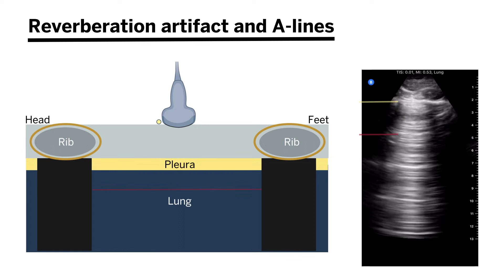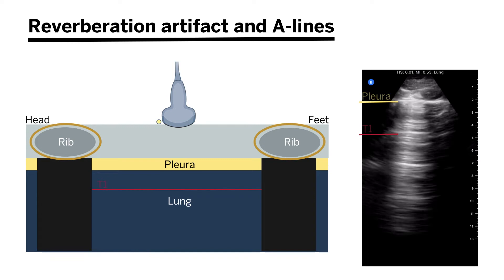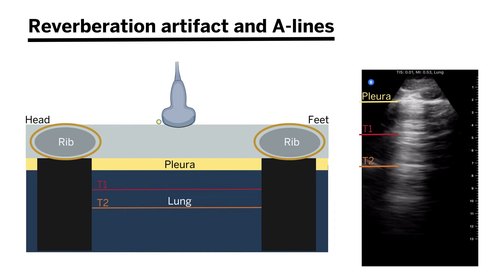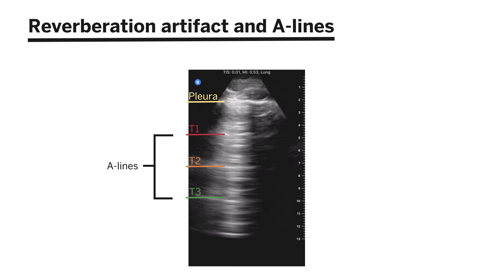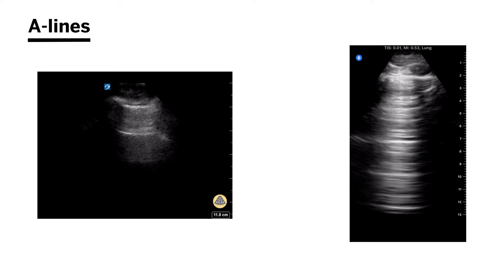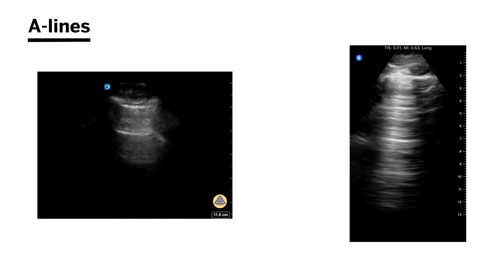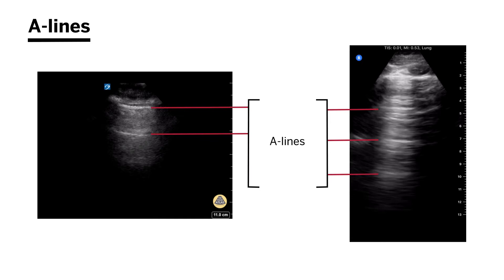Remember that the longer it takes for sound to return to the probe, the deeper the machine thinks the structure is. Sound will continue to reverberate at time one, time two, and so on. Since each reverberation takes longer to return, the machine interprets each as being even deeper, creating a horizontal artifact seen between rib spaces known as an A-line. You can appreciate a little lung sliding at the pleura, and then at equidistant depths from the pleura you'll see these horizontal repeating artifacts — the A-lines. A is for air: it simply means you're insonating an air-filled structure.